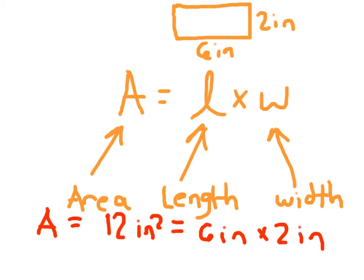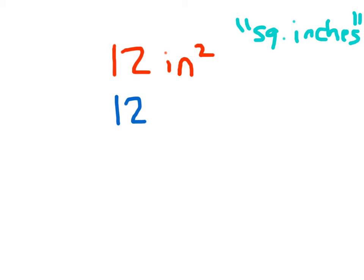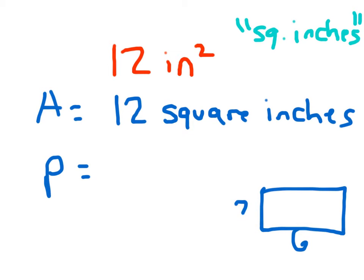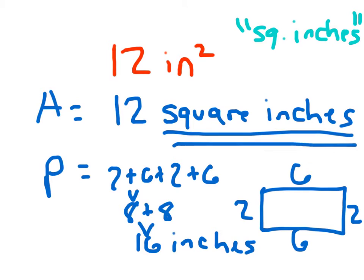12 square inches is our area. And this is what we'll write. Let me explain our label here when I said square inches. So we had this thing that's 12 square inches — that's what we say. The other ways that we can write that: we can write 12 square inches, write it out completely. Now, don't get that confused with the perimeter. The perimeter of that figure would actually have been 2 plus 6 plus 2 plus 6, which is 8 plus 8, which is 16.